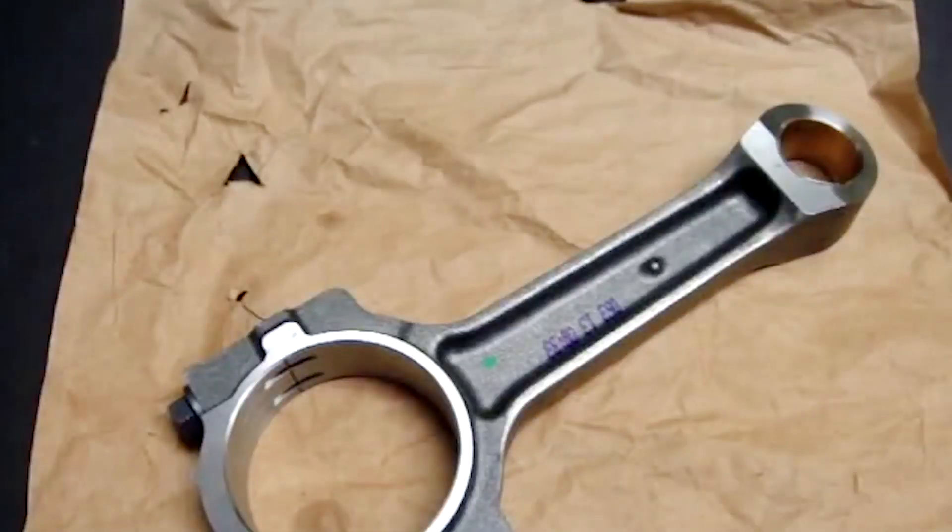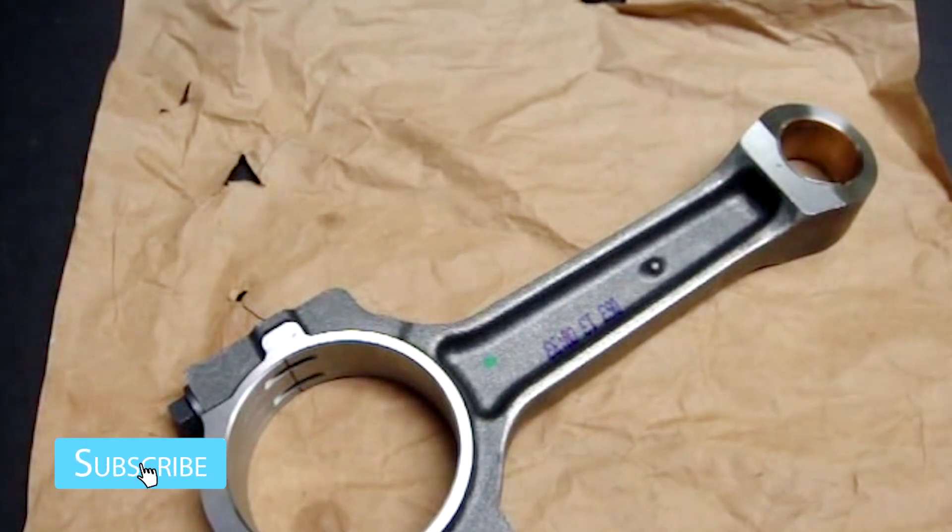For those of you looking to build LSA engines, I would say that the stock LSA connecting rod is actually a very good choice. But if you are going to push your engine well above 600 horsepower, you might consider looking at billet machined H-beam connecting rods or billet machined I-beam rods. But other than that, if you are going to be around 600 horsepower or less range, the stock LSA connecting rod is not a bad choice at all.